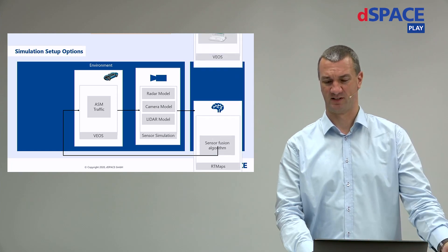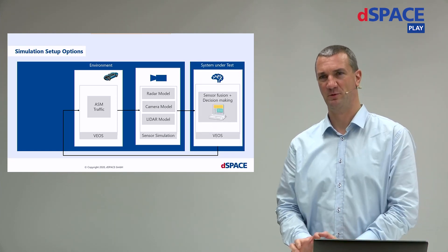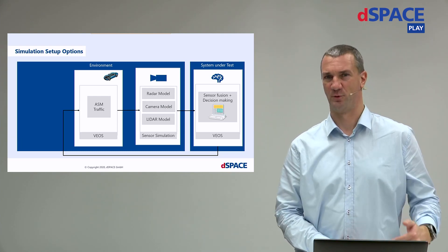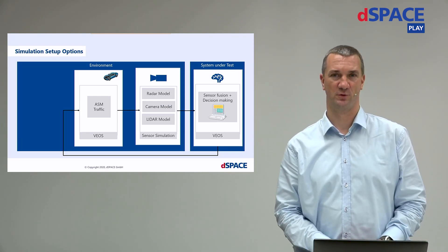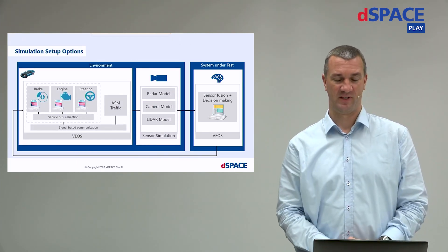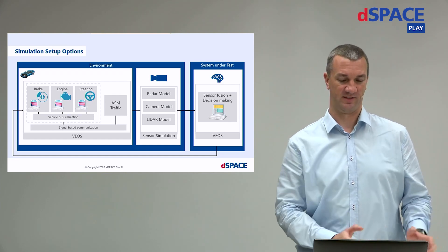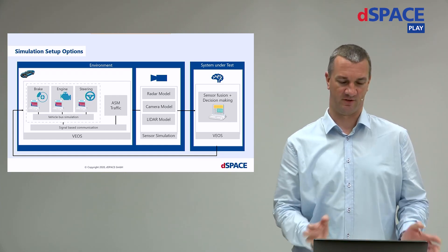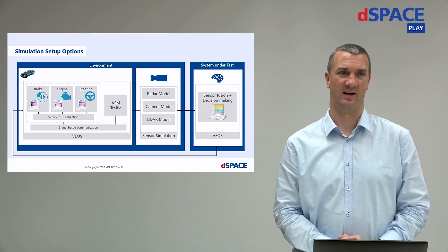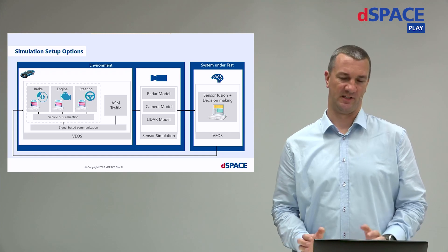In a more complex example, you may want to use a complete virtual ECU, maybe even with Adaptive AUTOSAR content for sensor fusion and decision making. To make it even more complex, you could have additional virtual ECUs and an ASM traffic simulation running together on a VEOS simulation. Depending on your test objectives, there are several SIL testing setups possible.